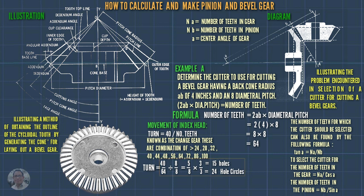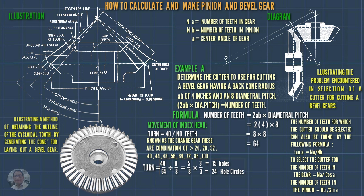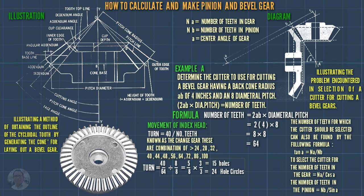Then 64 divided by 8 equals 8. Then 5 times 3 equals 15, and 8 times 3 equals 24. So that is 15 holes on the 24-hole circle on the indexing plate.